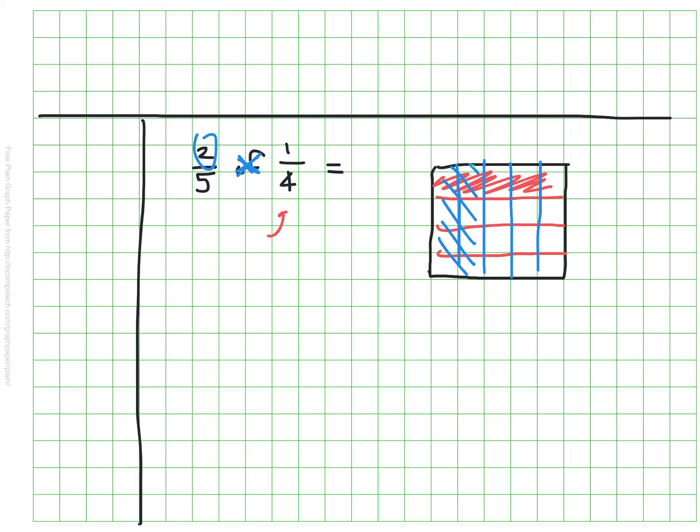Now remember what we're looking for in the brownie pan model, and that is where the shading overlaps. In this case that's right here. So there are two squares that are shaded in, and if I count up all the squares, this is a four by five rectangle. I can count up and know that there were twenty pieces altogether. So it's the fraction two-twentieths, or some of you might be thinking one-tenth.